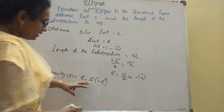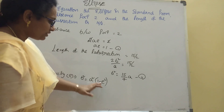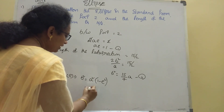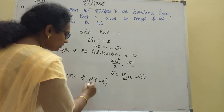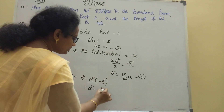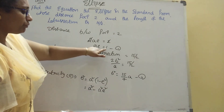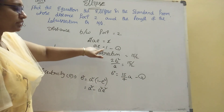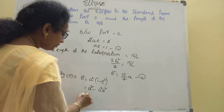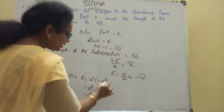We expand: b² = a² − a²e². Since ae = 1, we have a²e² = 1. So b² = a² − 1.